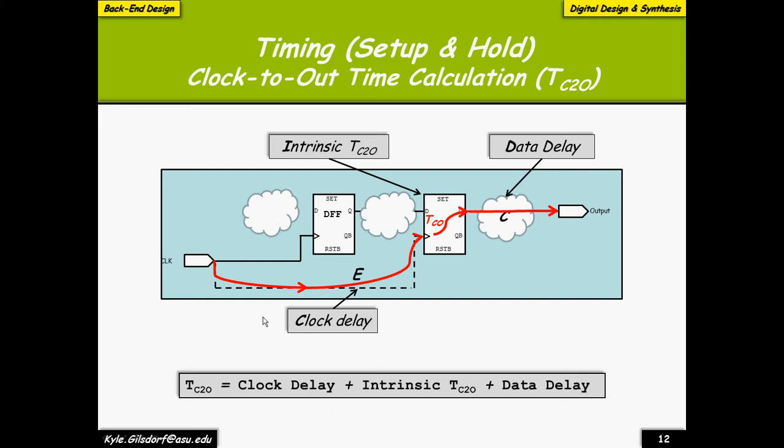And so, to figure out the actual clock to out time calculation, not to be confused with the intrinsic clock to out, we say clock delay, plus intrinsic T_cco, plus data delay.